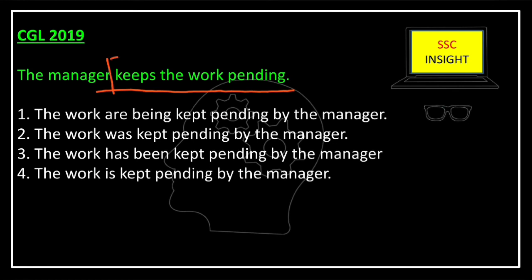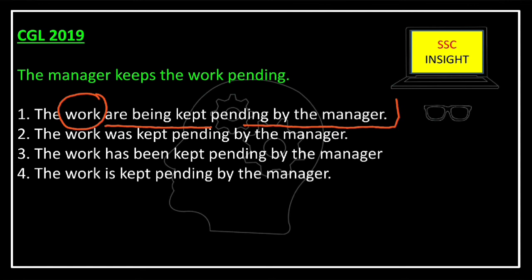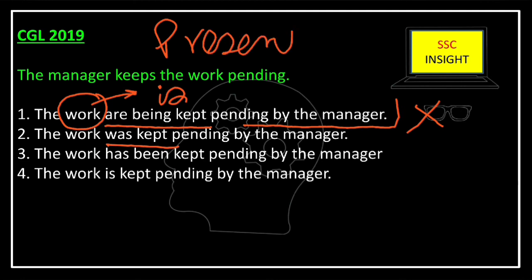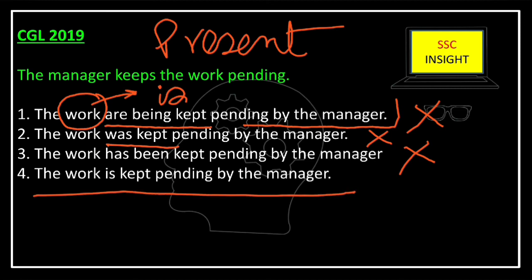The last example is from the SSC CGL 2019 exam: 'The manager keeps the work pending' — active voice, present indefinite. Option 1: 'The work are being kept pending by the manager' — 'work' is uncountable and always takes a singular verb 'is,' so 'are' is incorrect. Option 2: 'The work was kept pending' — past indefinite, incorrect. Option 3: 'The work has been kept' — present perfect, incorrect. Option 4: 'The work is kept pending by the manager' — passive voice, present indefinite, and uses 'is' correctly with uncountable noun 'work.' The correct answer is option 4.